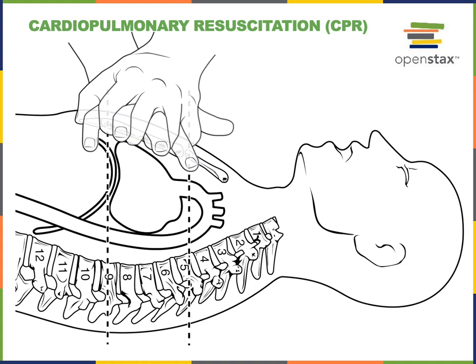If you compress onto the xiphoid process, there is the danger that you could break the xiphoid process off and lacerate the liver, causing serious internal bleeding problems. While giving compressions on the body of the sternum in an adult, you want to compress down around two inches and then allow the chest to expand, then compress again with a steady rhythm of around 100 beats per minute.